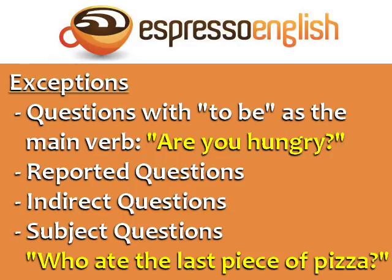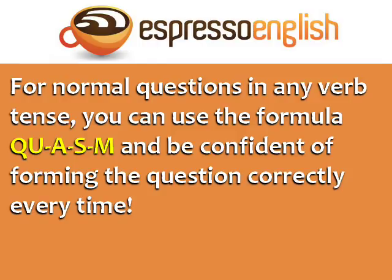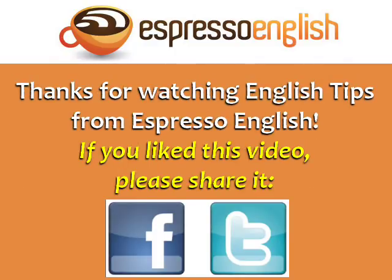Those exceptions don't follow this formula, but we'll learn those in a different lesson. For normal questions in any verb tense, you can use the formula — question word, auxiliary verb, subject, main verb — and be confident of forming the question correctly every time. Thanks for watching English tips from Espresso English. If you liked this video, please share it.